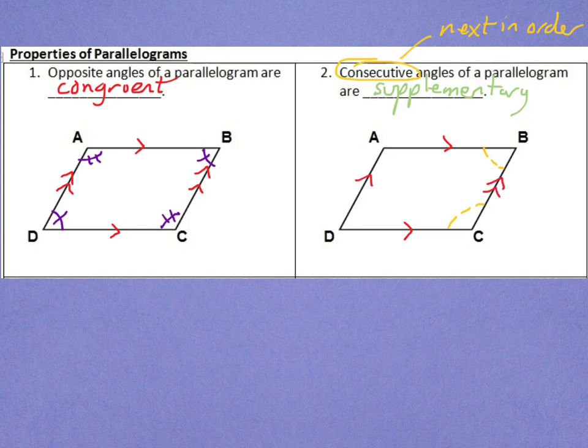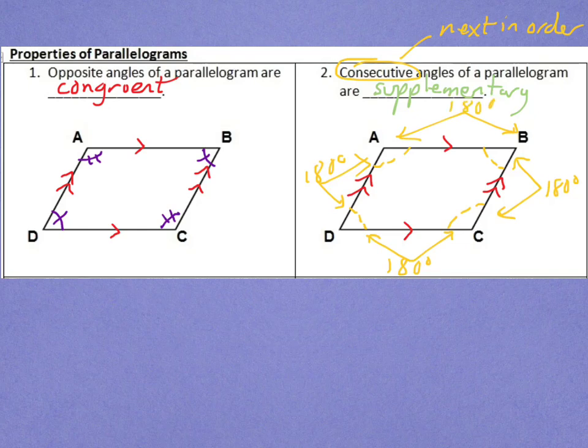Also, because the other set of sides is parallel, I know that angles C and D are same side interior, and those are supplementary. So, B and C add up to 180 degrees. Angles D and C add up to 180 degrees. Angles A and D add up to 180 degrees. And angles A and B add up to 180 degrees. The angles that are next in order in the parallelogram are supplementary.